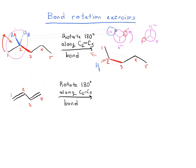— after rotating 180 degrees, H_B ends up at 4 o'clock. Looking at it from this direction, H_B would be on our right at about 4 o'clock, and carbon 1 would be at 12 o'clock. So this is what the molecule looks like after rotating 180 degrees along the C2-C3 bond.